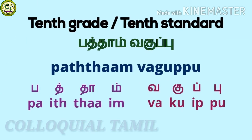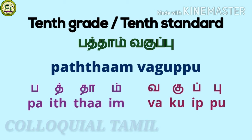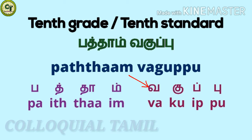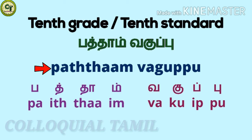In Tamil, 'tenth grade' or 'tenth standard' is 'patthavadhu vaguppu.' You know 10 is 'patthu.' For 'patthavadhu,' the consonant is added at the end. For 'vaguppu,' V, a short stone letter, ku, a short stone letter — while speaking, 'ku' may also sound as 'goo' in some words — then pu, a short stone letter, together gives 'vaguppu.' So 'patthavadhu vaguppu.'